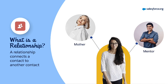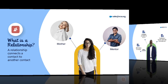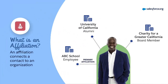A contact might interact with multiple organizations in ways that are helpful to know about — that's where affiliations come in. An affiliation connects a contact to an organization account record. For example, an affiliation could include a college or school they attend, a business where they work, if they volunteer at a nonprofit, or serve on the board of a foundation. While a contact can belong to only one household account, the contact may have lots of affiliated connections to many organizations.